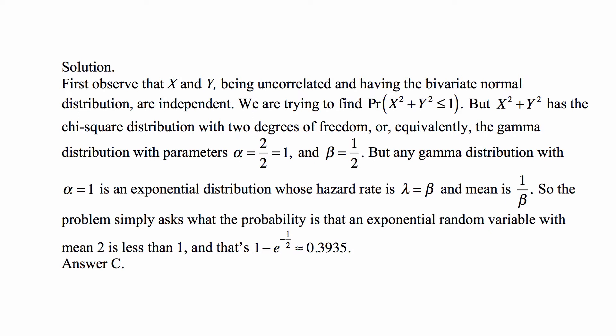We are trying to find the probability that X squared plus Y squared is less than or equal to 1. But X squared plus Y squared has the chi-square distribution with two degrees of freedom, because both X and Y are standard normal, so the sum of their squares has a chi-square distribution with two degrees of freedom, because we're adding two such squares.